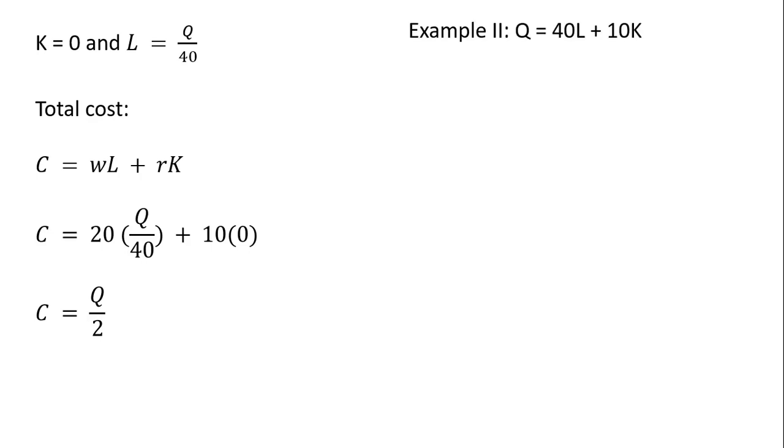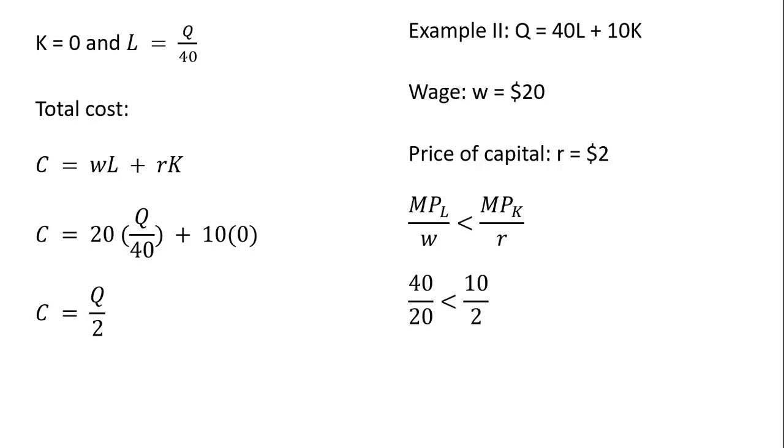Let's do another example. Example 2, same production function. The only thing here I'm going to do is lower the price of capital to $2. And in this case, the marginal product of capital divided by the price of capital will provide more added output per dollar spent. So 40 divided by 20 will be less than 10 divided by 2. So in this case, we're not going to employ any labor. L will equal 0.